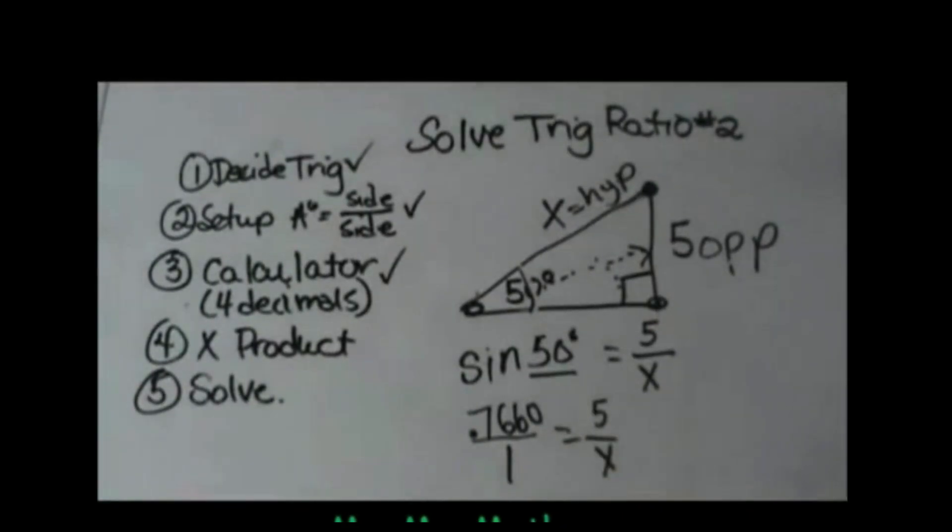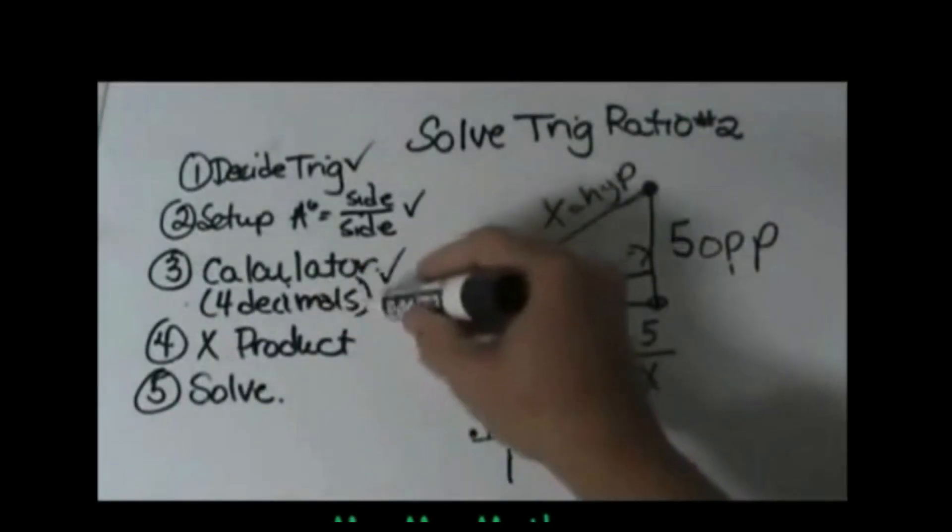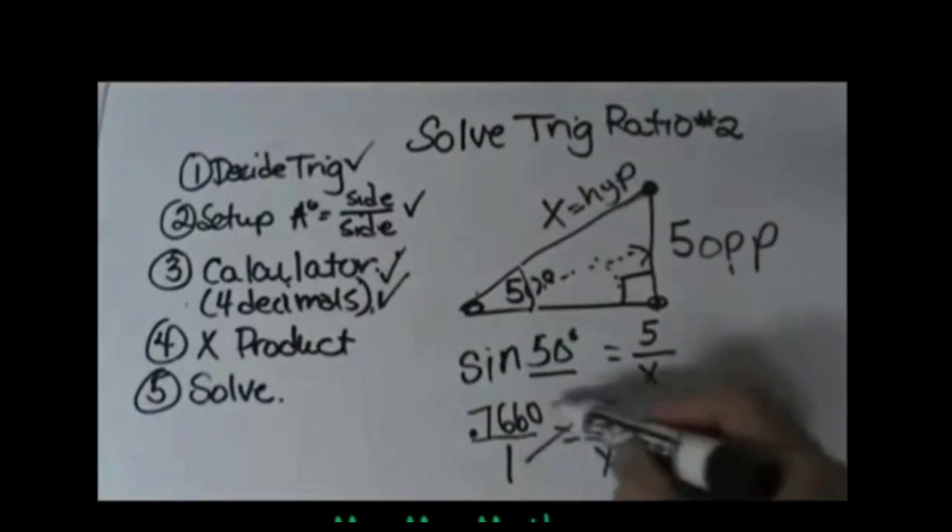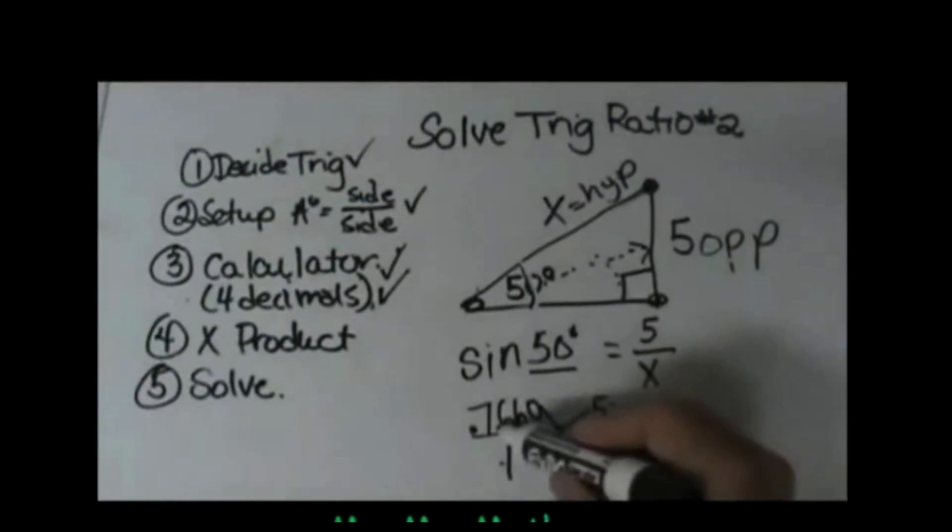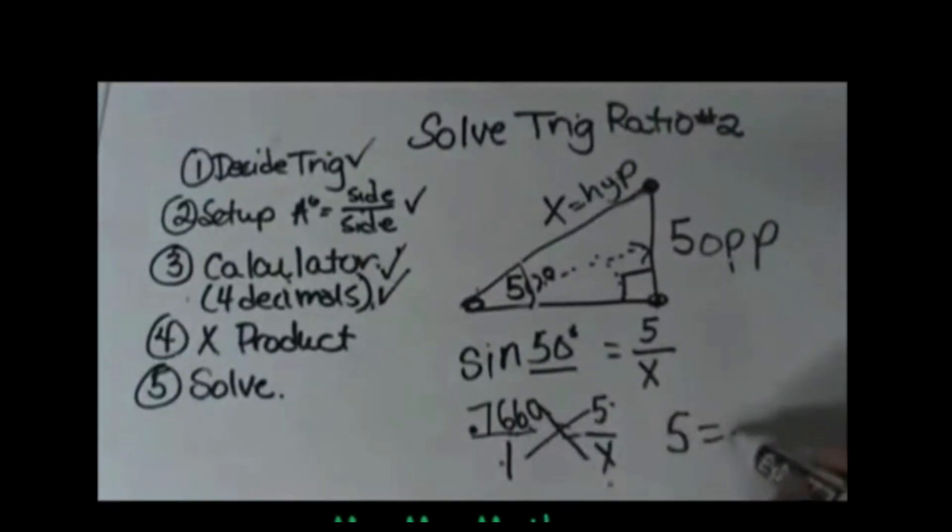Now I can do a simple cross product. So I've changed my calculator or I've used my calculator to change my ratio to four decimals and I've set up a cross product. Now let's just cross multiply. 5 times 1 is 5 and 0.7660 times x is 0.7660x. So that decimal is now my coefficient.